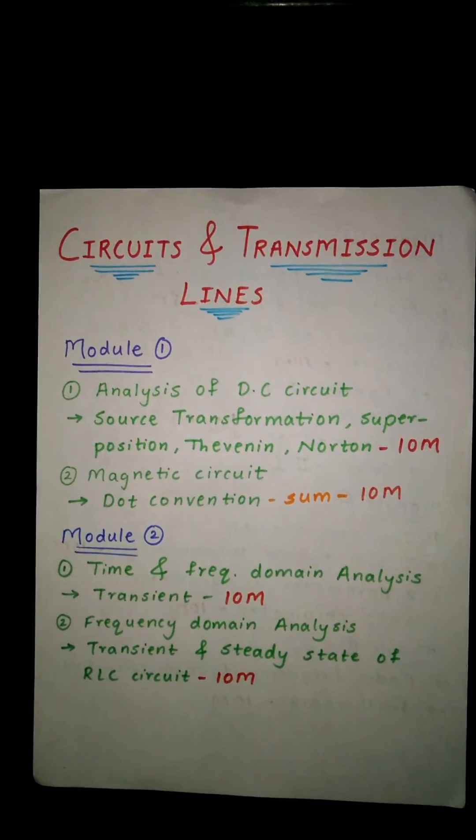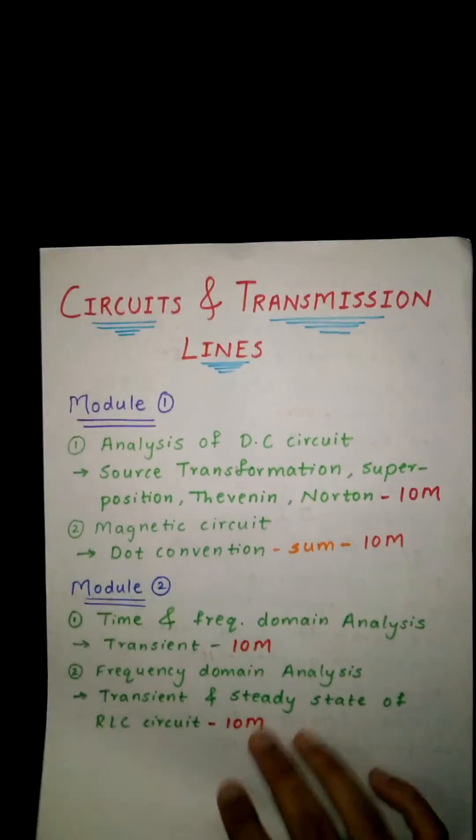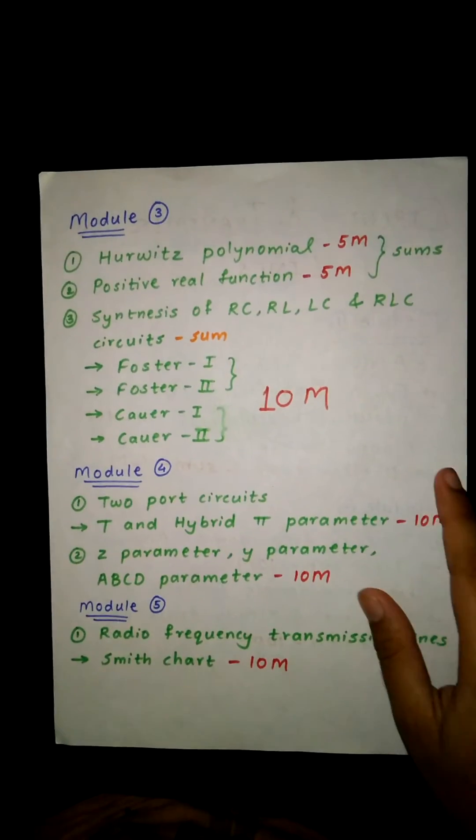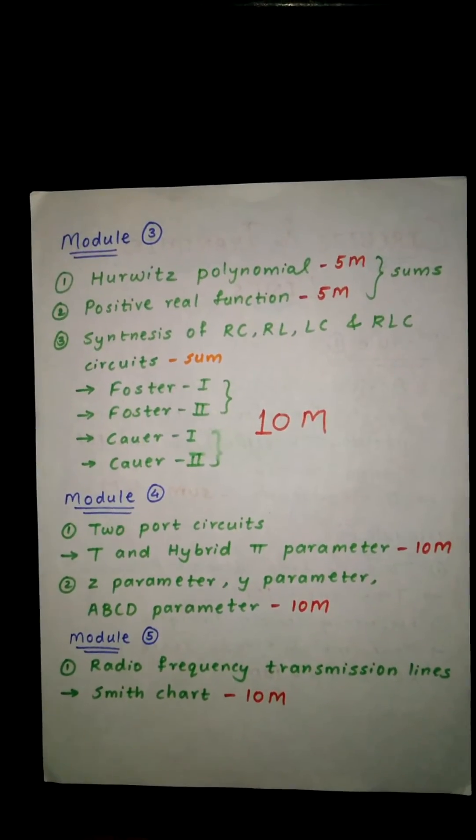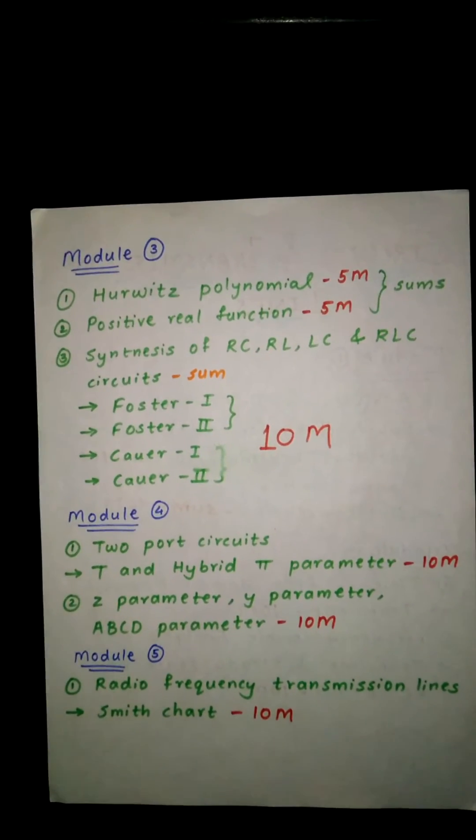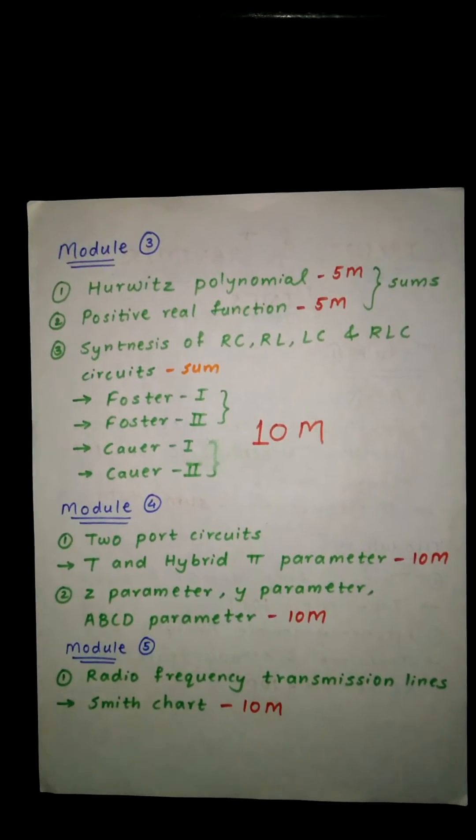Moving further to Module 3, you will get Hurwitz polynomial which is of 5 marks and positive real function which is of 5 marks. You will get mainly these questions in the compulsory question, that is in question number one.